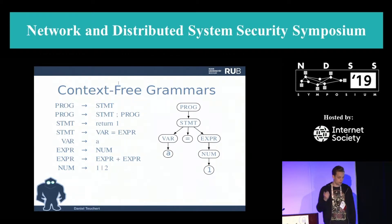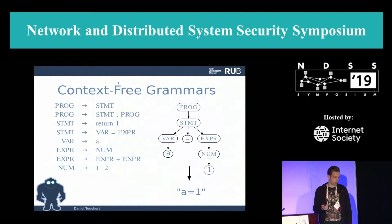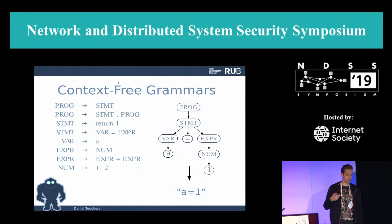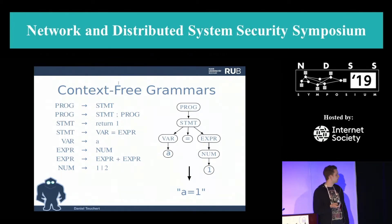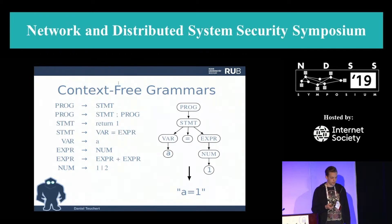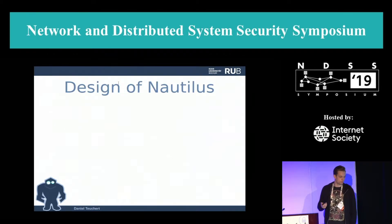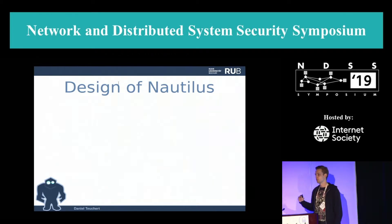We can use such a grammar to create an abstract syntax tree where the derivation rules form a tree, and this tree can be unparsed into a concrete input. For example: a program turns into a statement, a statement turns into an assignment, the assignment has a variable and an expression on the right-hand side — the variable is 'a' and the expression is '1'.